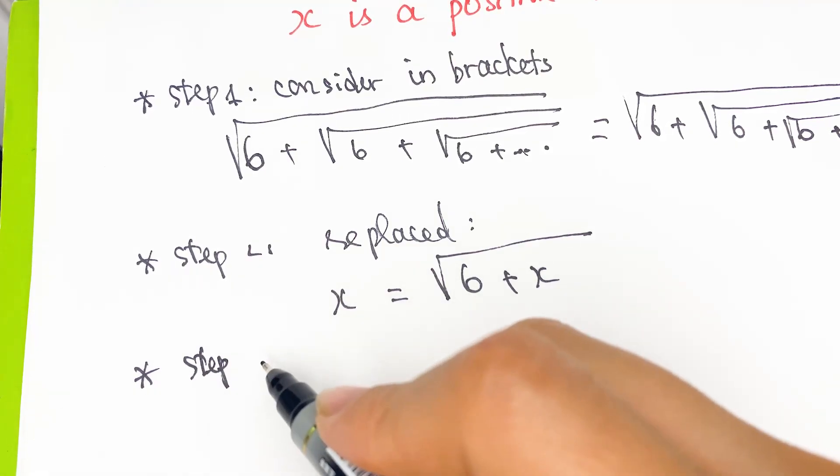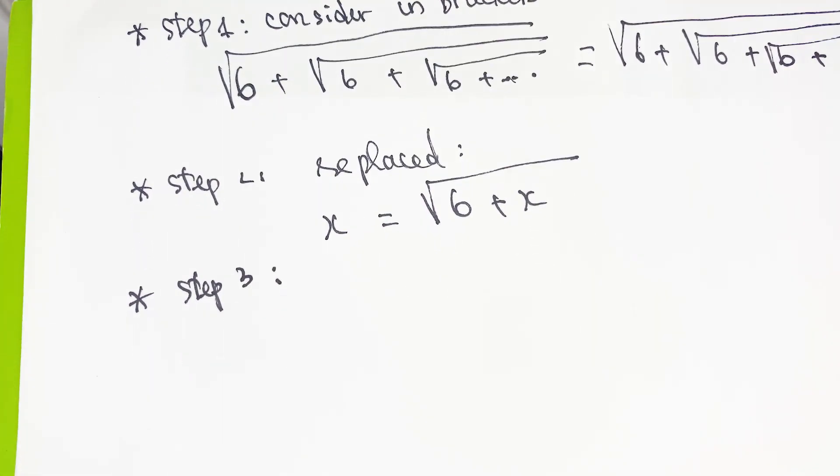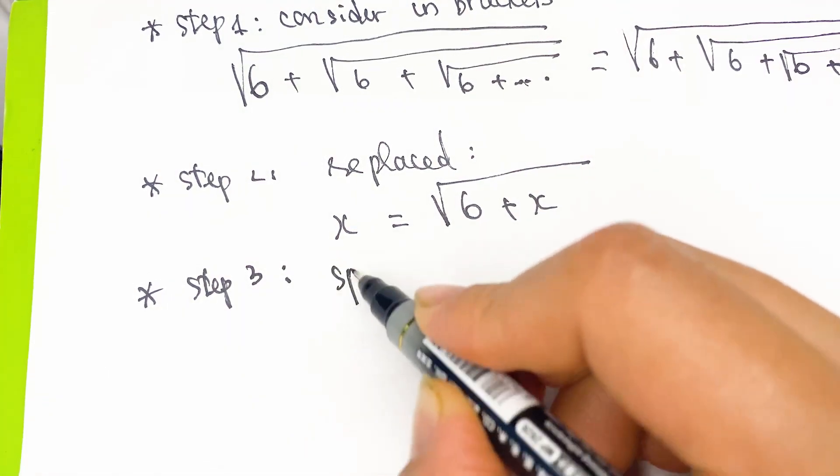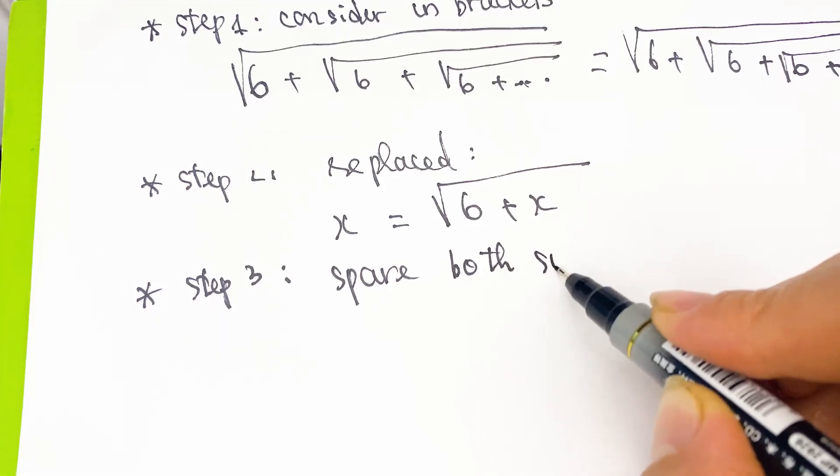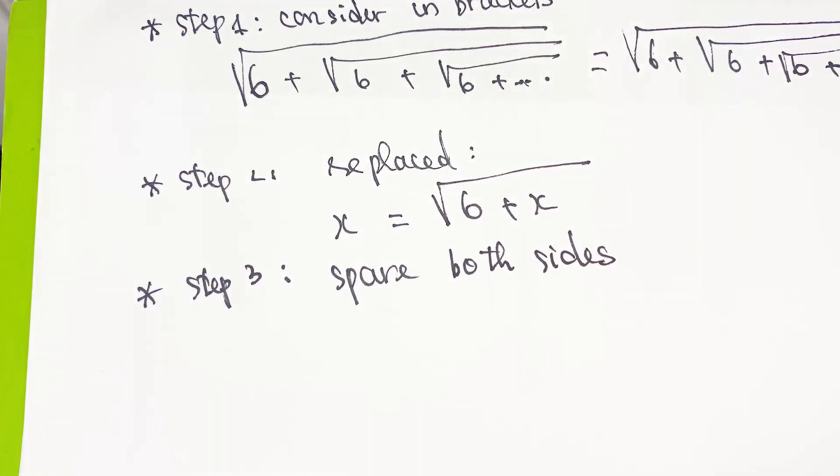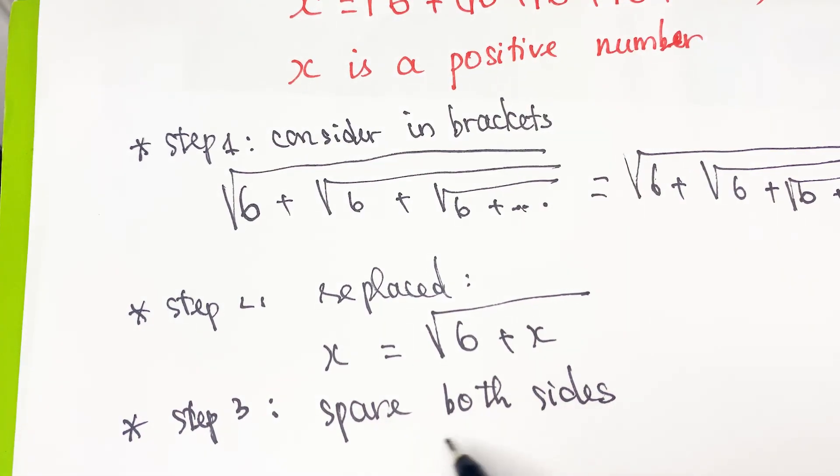For the last step, I think it's quite simple. Step 3, you need to square both sides. Because x is a positive number, you can square both sides.